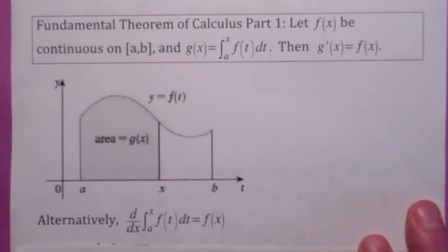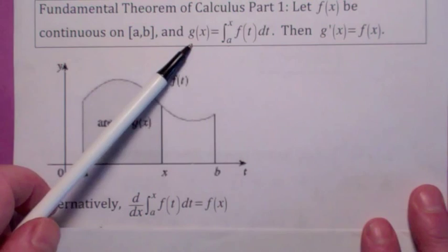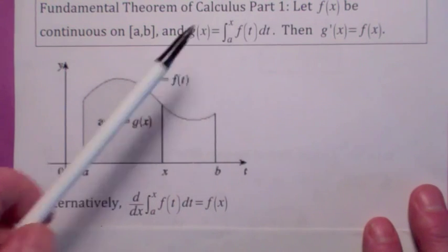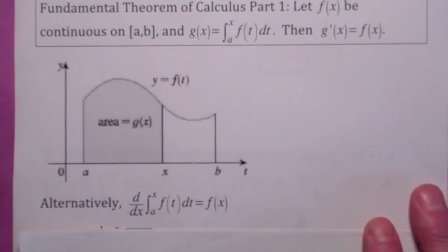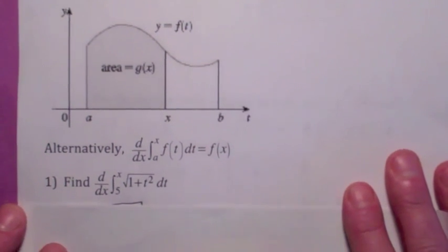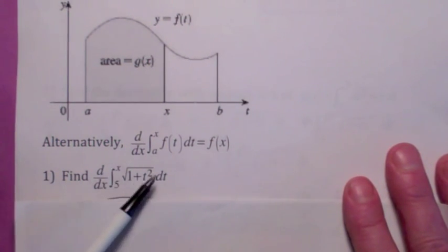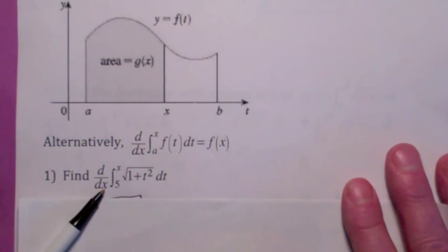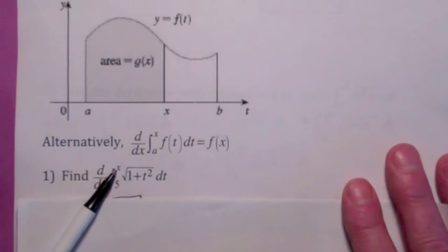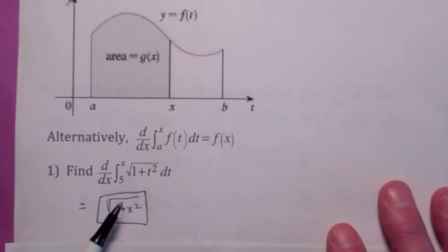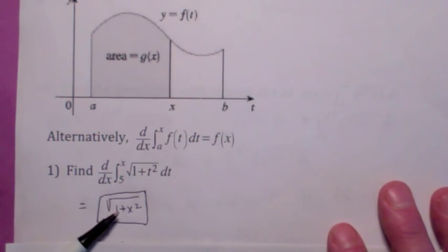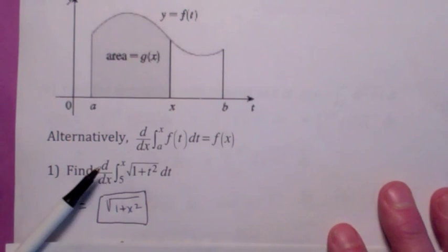What it's saying is: if you think of this function g of x as a function of x, the derivative of this function with respect to x is equal to the function evaluated at x. So what's the derivative with respect to x of this definite integral? As long as the variable you're taking the derivative with respect to is the same as the upper limit of integration, it's just the integrand evaluated at the upper limit. Notice the bottom limit — as long as it's a constant — doesn't really affect your answer. It drops out; it could be 0, it could be 5, it doesn't make any difference.